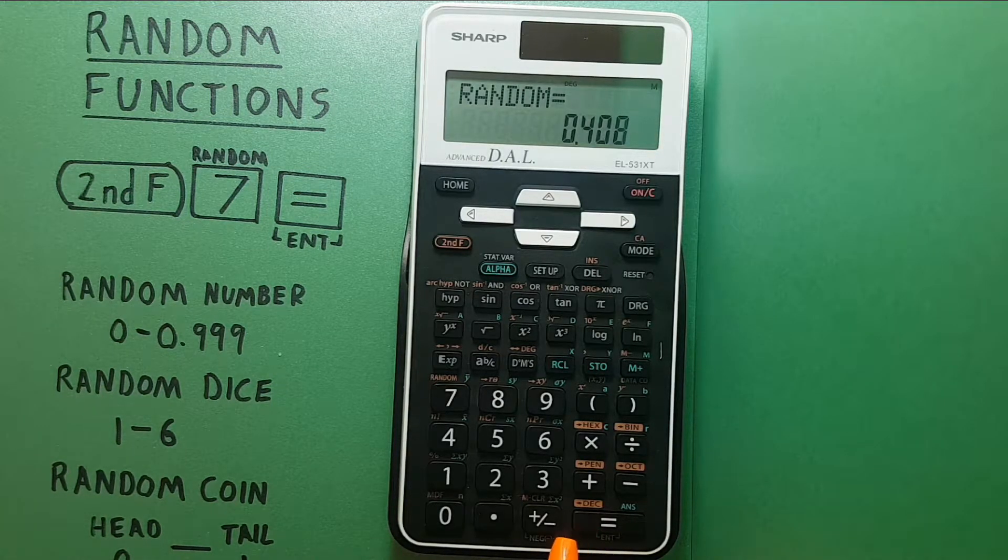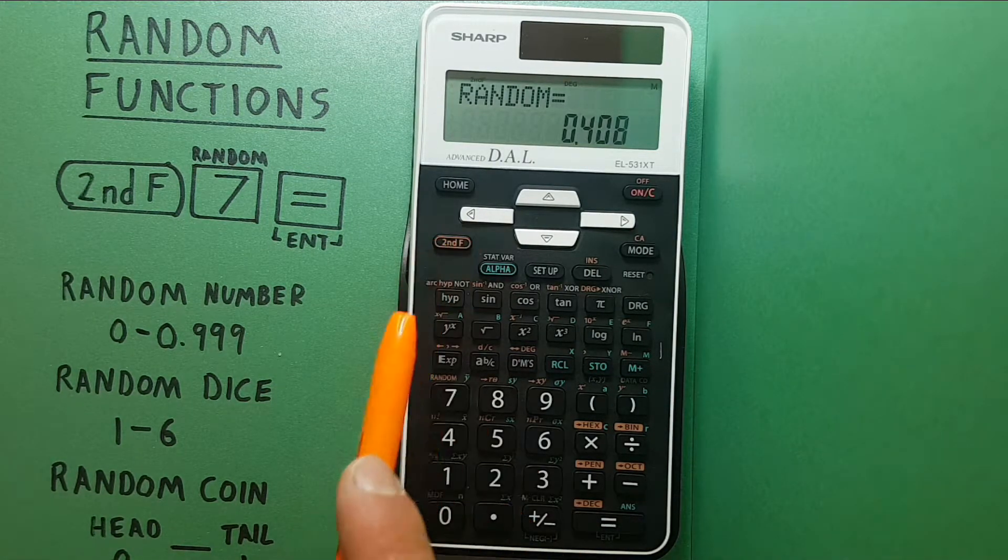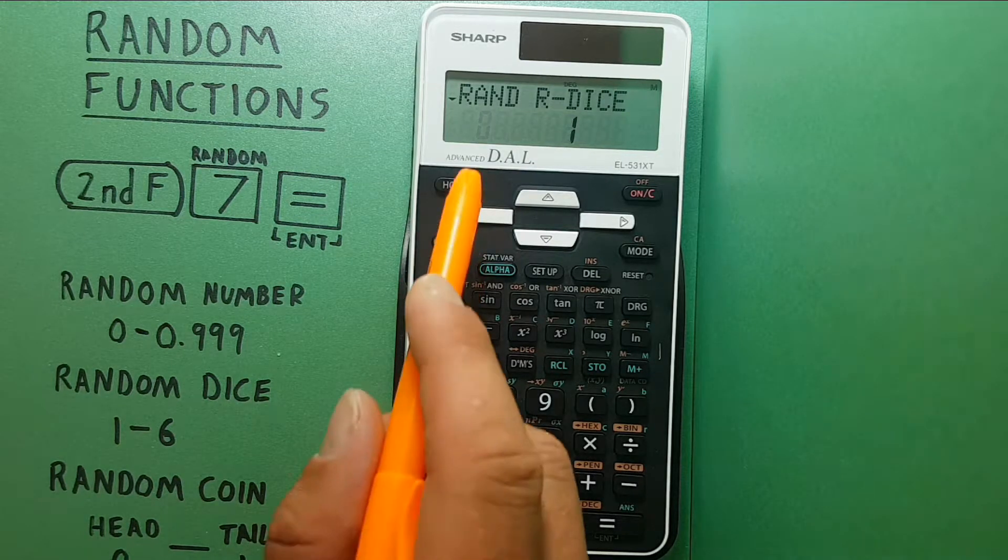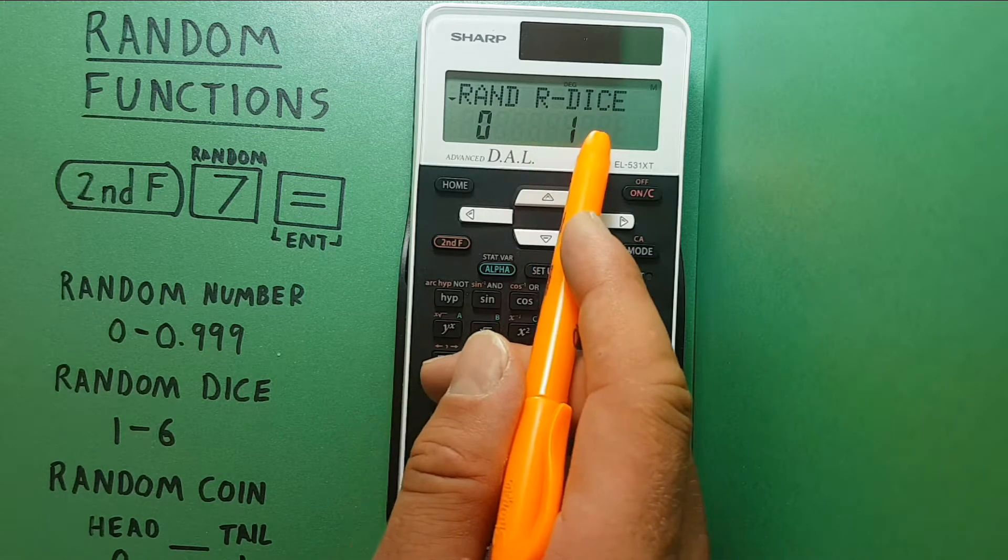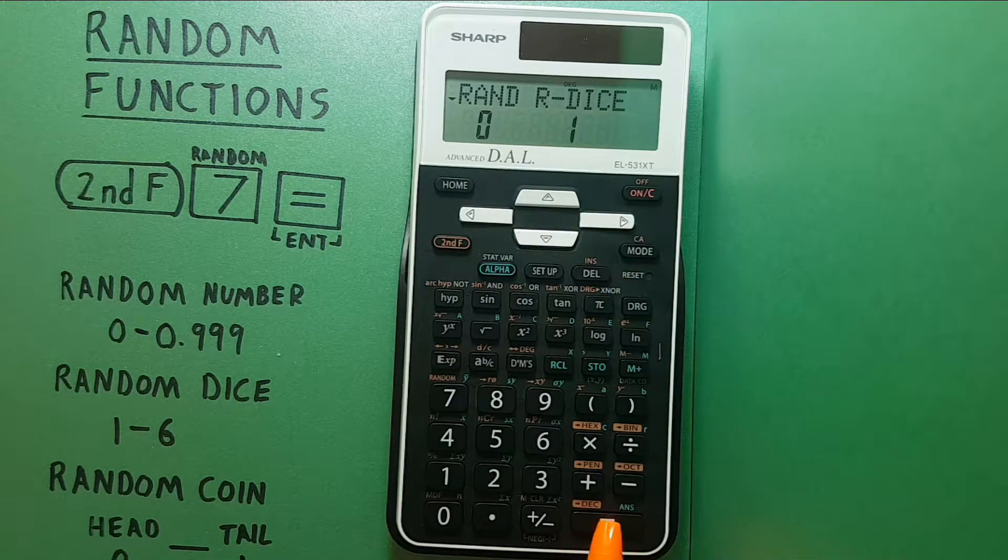Alright now let's look at the random dice roll. To do this we use the arrow to move over one highlighting the r dice and press equals to select it.